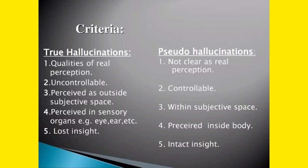True hallucination is perceived as outside subjective space — the hallucination is occurring from outside the patient, and the source is perceived as external. The patient perceives someone speaking from outside in their ear. But in pseudo hallucination, the patient says the hallucination is coming from inside the mind — someone is speaking within the mind, and that is also not clear. So it is within the subjective space, within the patient's mind.